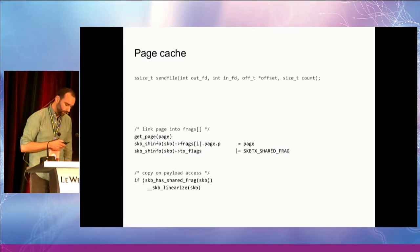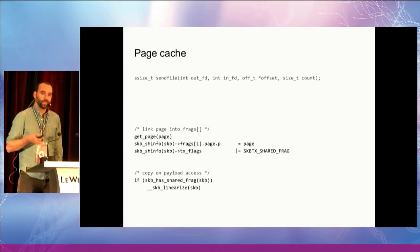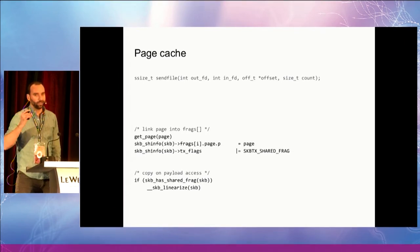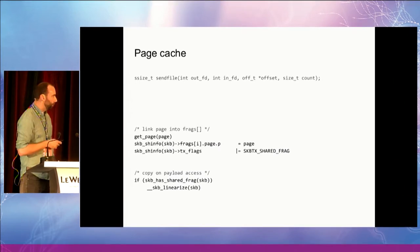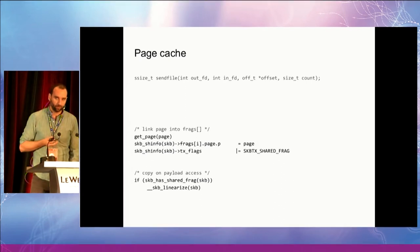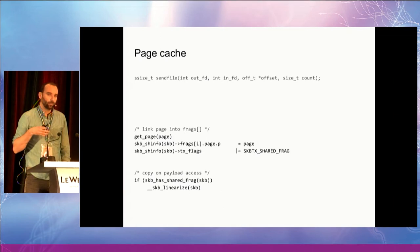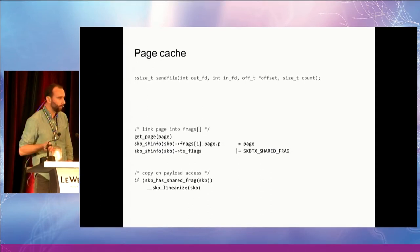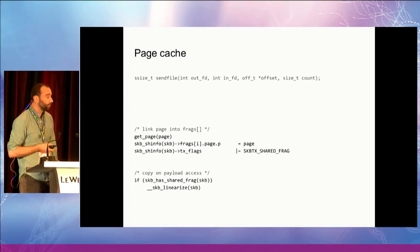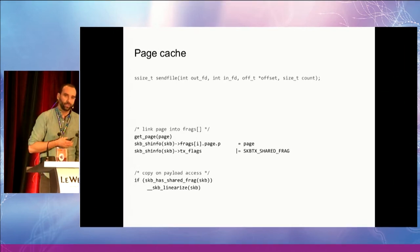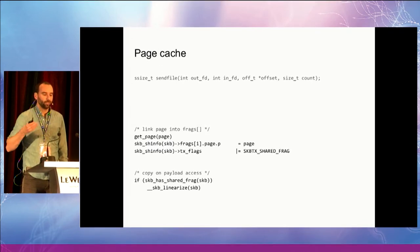Looking at TCP send page, the implementation is what you would expect. We look up the page in the page cache, take an extra reference, put it in the SKB frags array, and mark the SKB shared info with the shared frag bit. We have to be careful not to change this data while it's being used by the stack. Although we have a reference on the page, it doesn't block anyone from changing the page contents. Normally the network stack only cares about protocol headers, which are kept in the SKB linear struct, not the frags array.